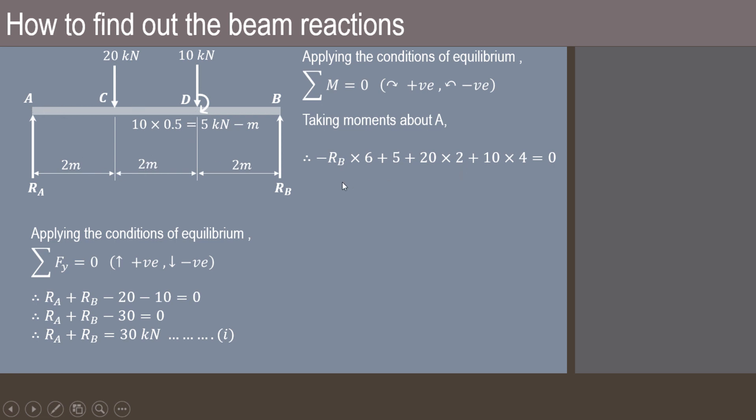So it is -RB × 6 + 5 + 20 × 2 + 10 × 4. So 20 × 2 that is 40, 10 × 4 that is 40 plus 5, so it is 85.